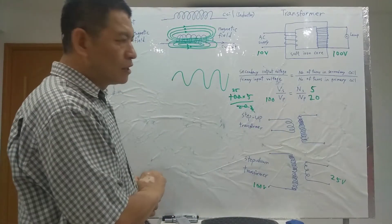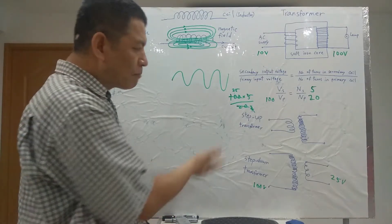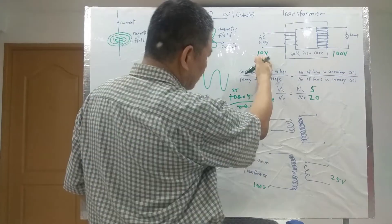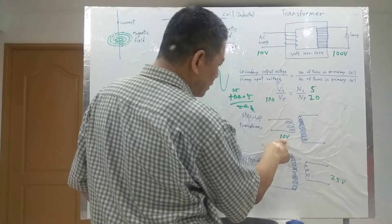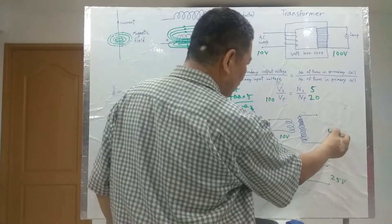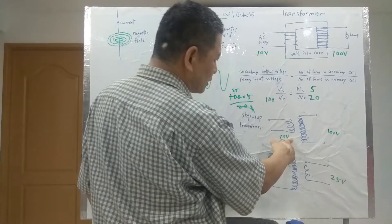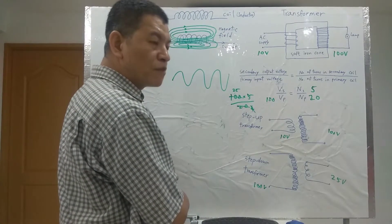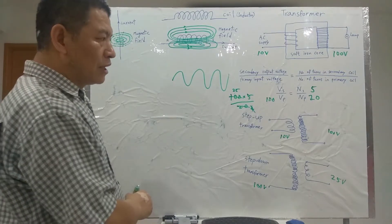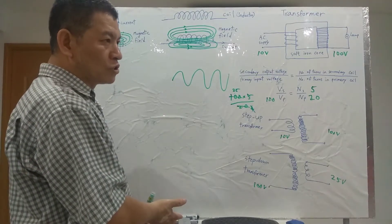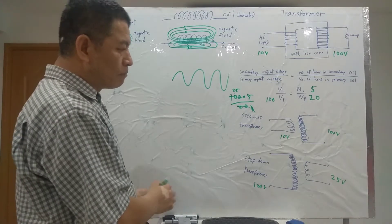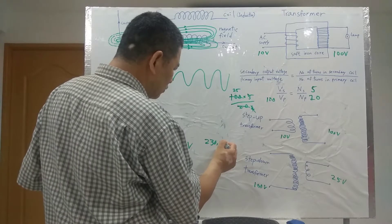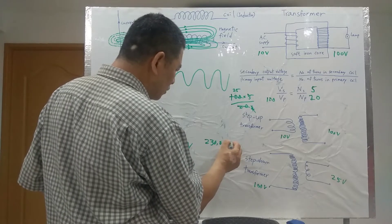This is the theory of the transformer — it can step up or step down. For the step-up transformer, the primary input is 10V and the secondary output is 100V, so the ratio is 1 to 10. The step-up transformer has practical functions, like a power station stepping up its voltage to very high power — from maybe 230V, stepping up to 230,000V.